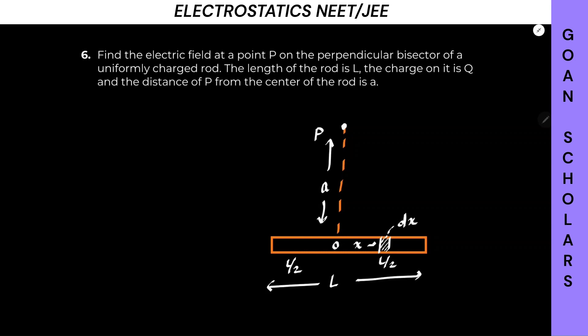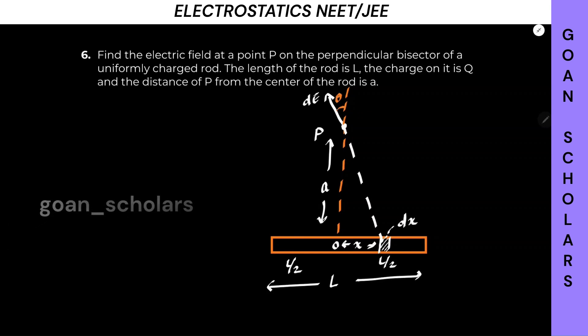Let's say this is the center O, and from O this element is at a distance of x. Assuming there is positive charge all over this rod, the electric field due to this dx element will be radially outward. So let's join point P and dx — this will be our dE. If we elongate this side, it will make an angle theta here.